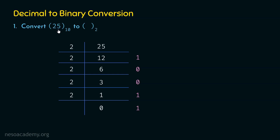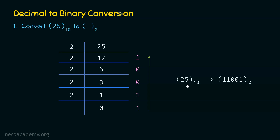The numbers should be read from bottom to top — I have drawn an arrow so you will never forget this. As we read these remainders from bottom to top, we get 11001. This is the binary equivalent of the decimal number 25.